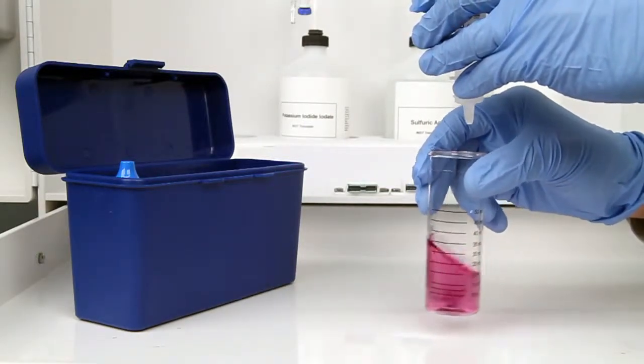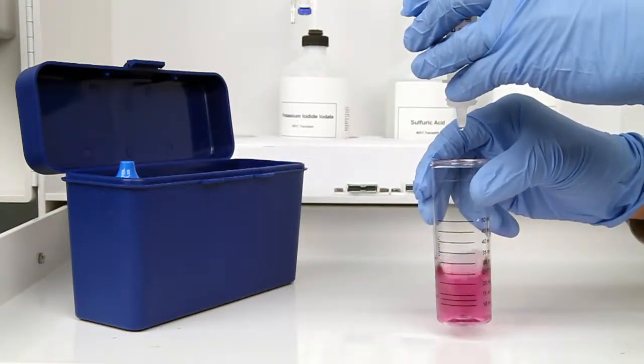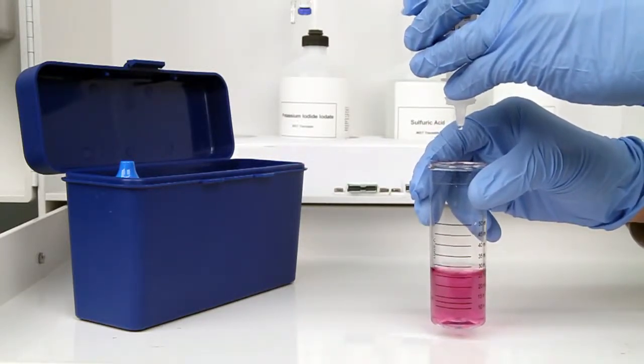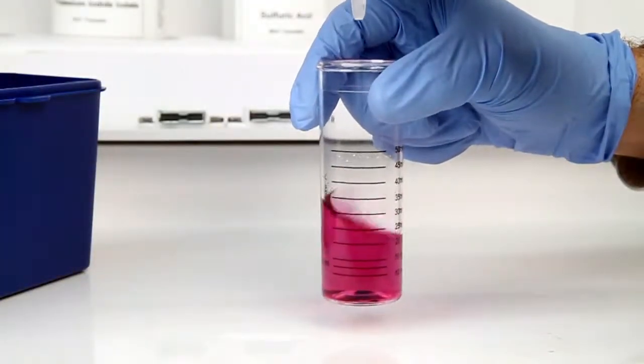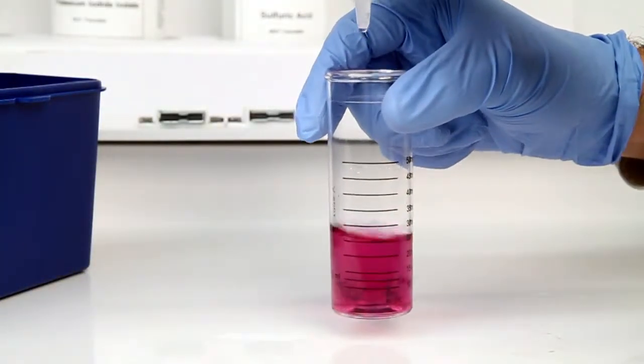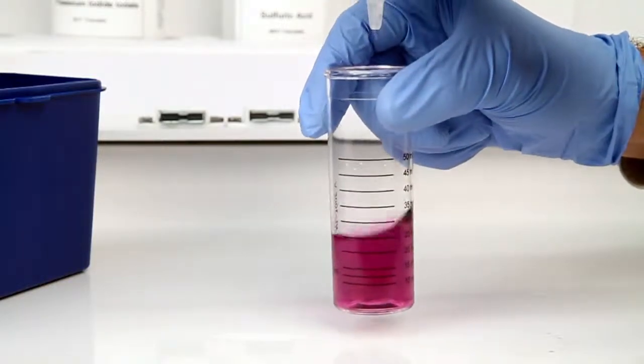The bottle of titrant contains a dropper tip, therefore it's important to hold the bottle vertically to make sure you get a consistent drop size. After the addition of each drop of titrant, you want to swirl the vial to make sure the sample is properly mixed.